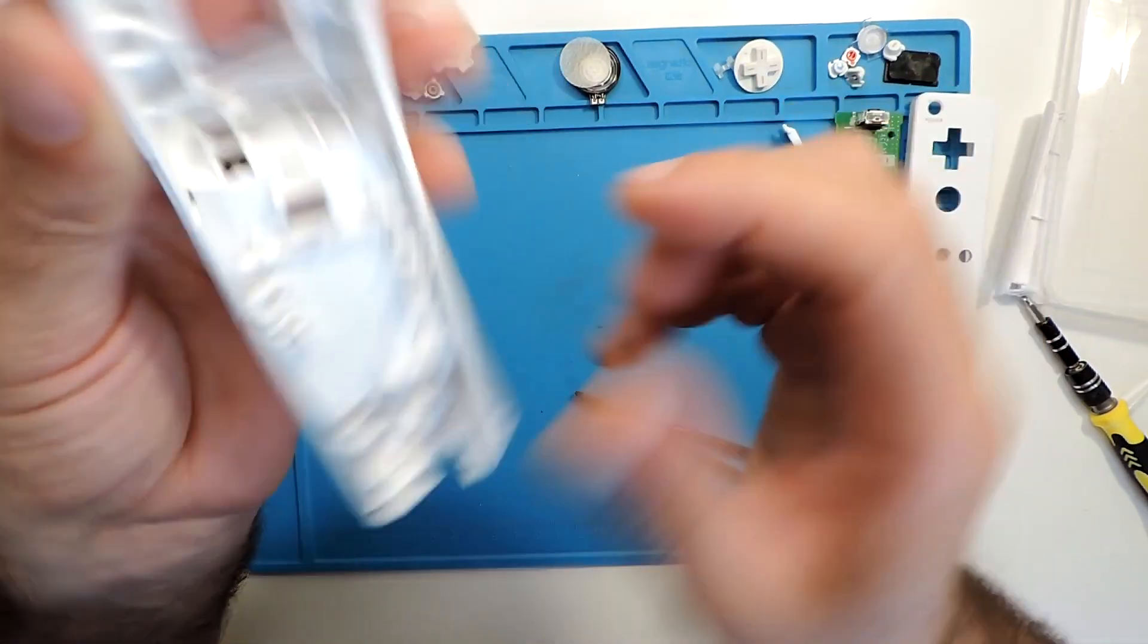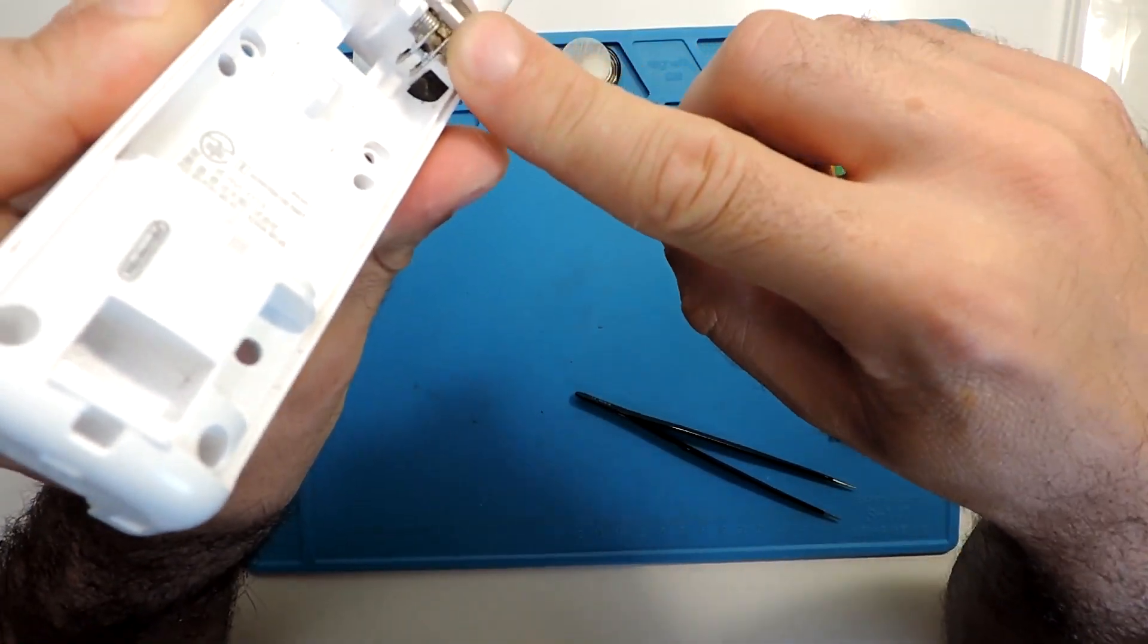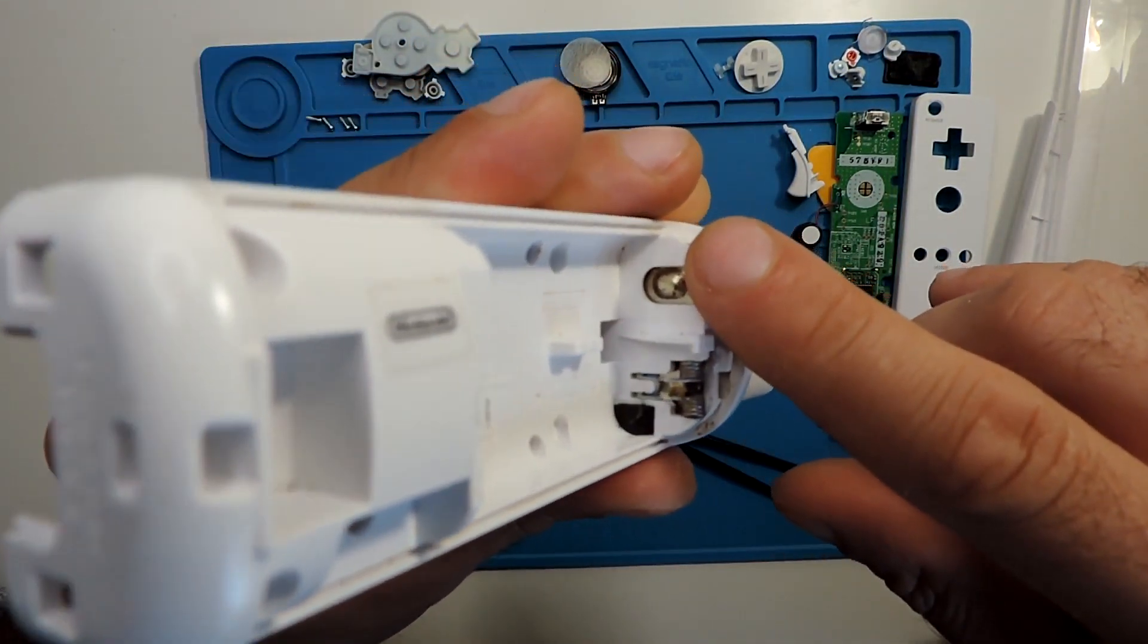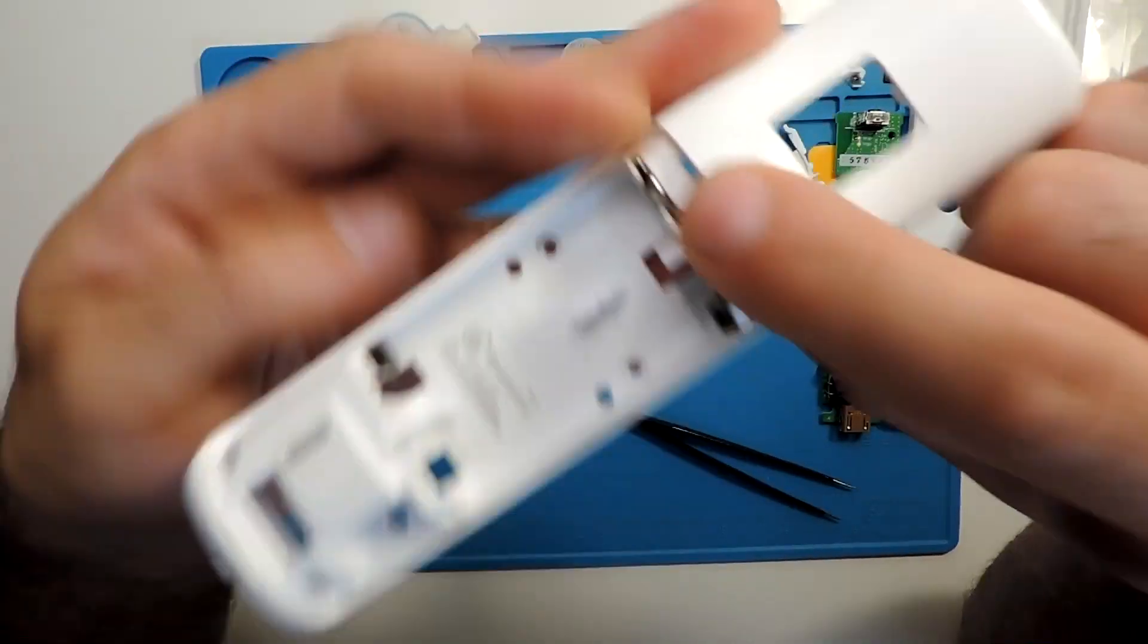In case you need to take out the battery terminal—sometimes this rusts a bit, and actually this one is just a little bit rusty but not much—taking this out is a bit more tricky.